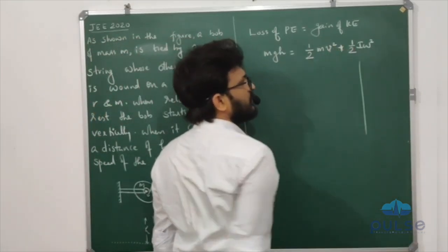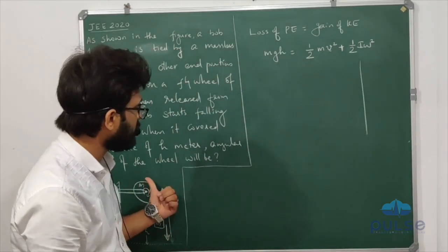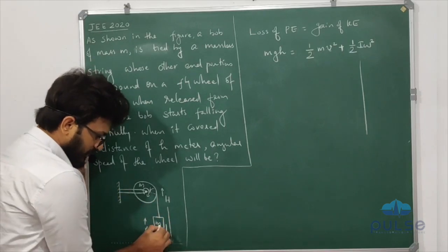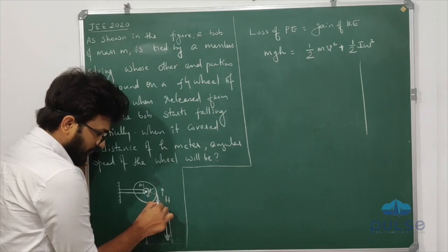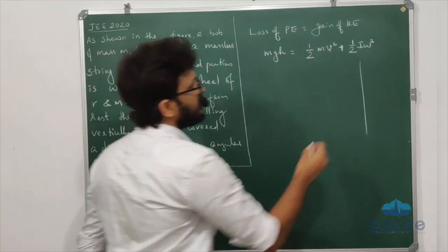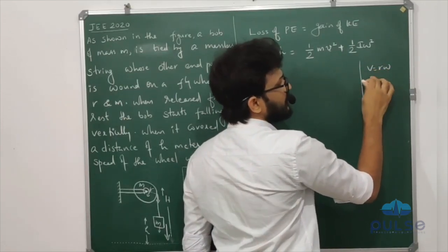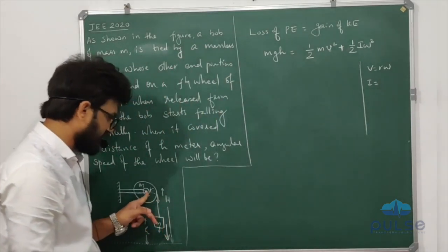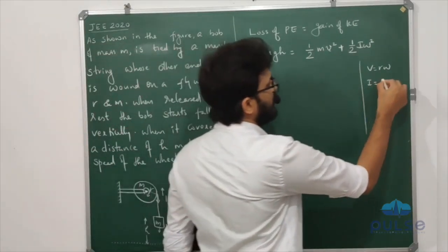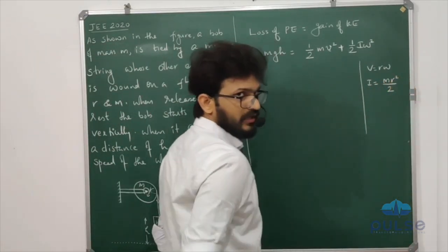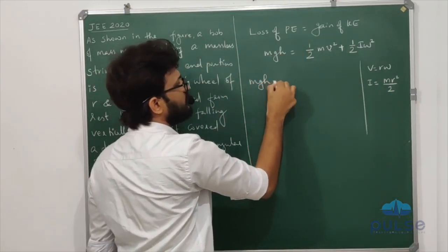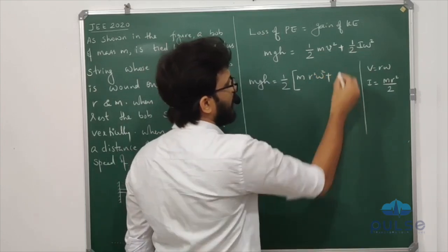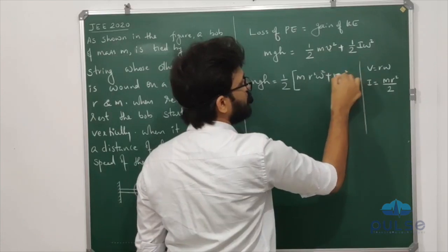The linear velocity and angular velocity omega are related. The linear velocity v of the string equals R times omega, so omega equals v divided by R — this is the circular motion equation. The moment of inertia of a disc about its central axis is I equals MR squared divided by 2. Substituting: M times g times h equals half M times v squared plus half times (MR squared over 2) times omega squared.